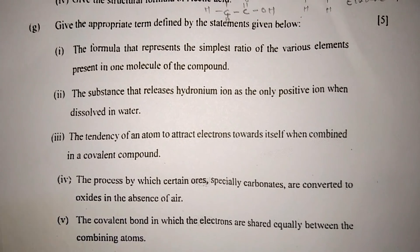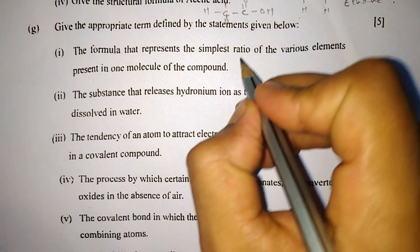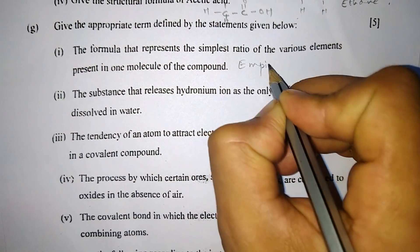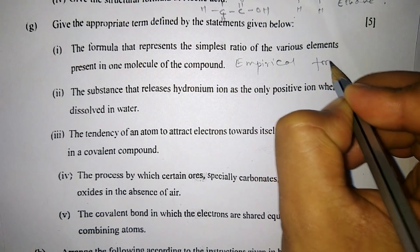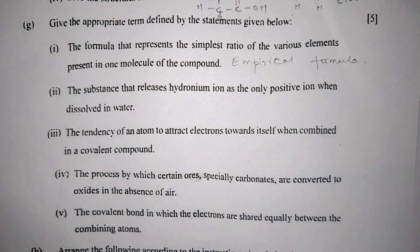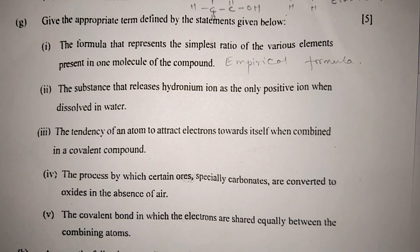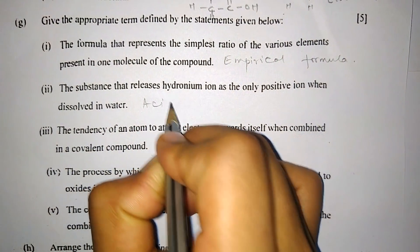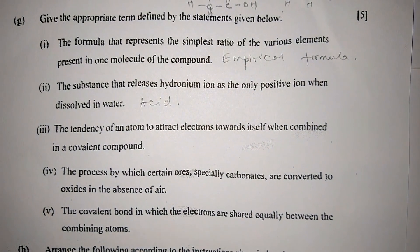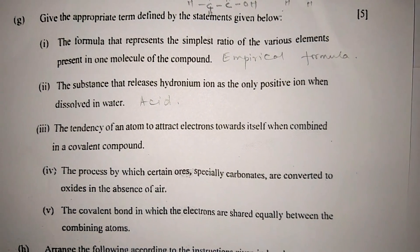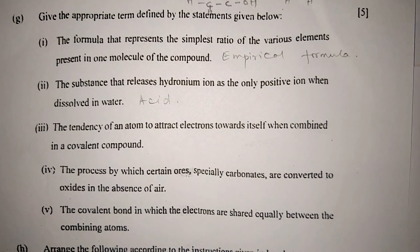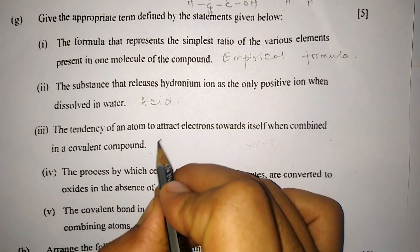Part G: Give the appropriate term defined by the statements given below. Number one: The formula that represents the simplest ratio of the various elements present in one molecule of the compound is empirical formula.